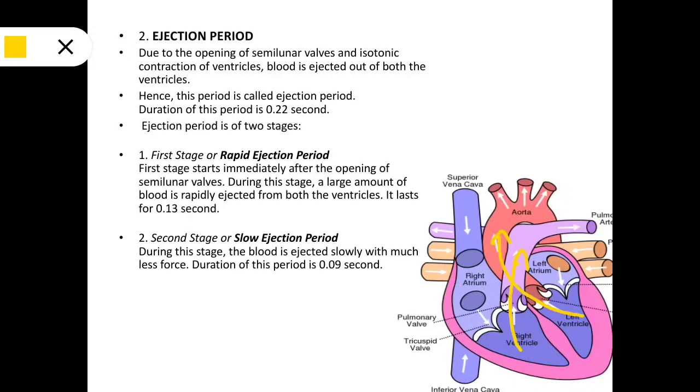First stage is rapid ejection period; second stage is slow ejection period. Rapid ejection period starts immediately after opening of semilunar valves. During this stage, a large amount of blood is rapidly ejected from both the ventricles. It lasts for about 0.13 seconds.